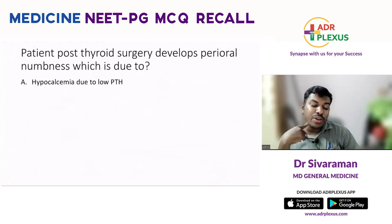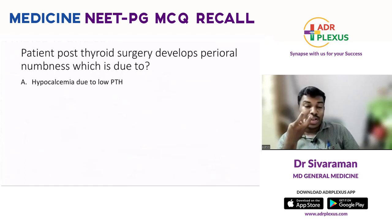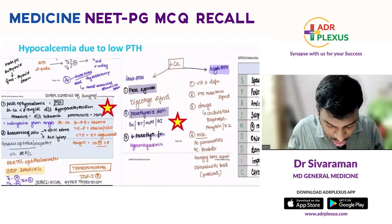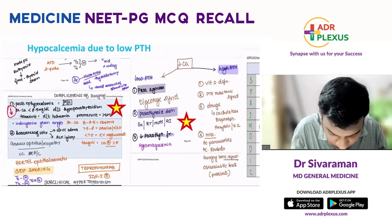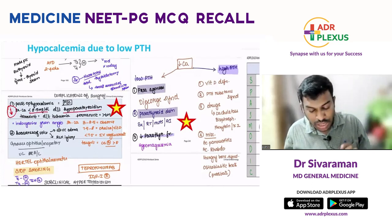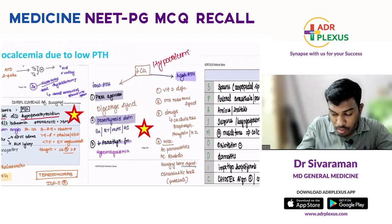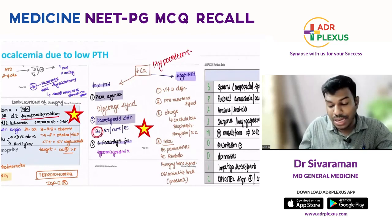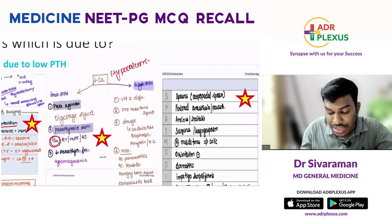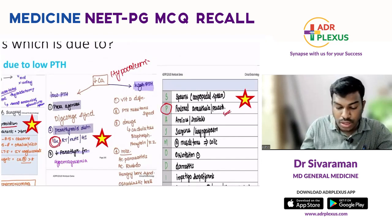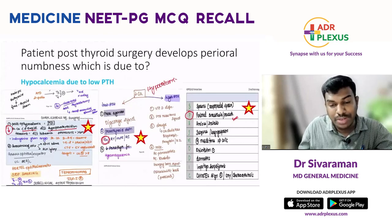A patient post-thyroid surgery develops perioral numbness — what is the cause? After thyroidectomy, the patient develops a decrease in serum calcium below 8.5 mg/dL due to hypoparathyroidism. Hypoparathyroidism causes hypocalcemia, and whenever a patient develops hypocalcemia, they develop perioral paresthesias and anesthesias. The answer is hypocalcemia due to low PTH.